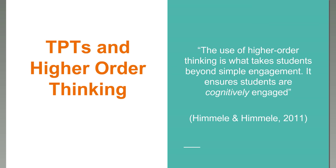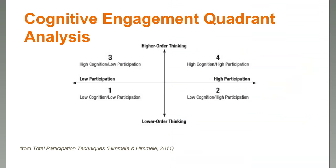Let's make the connection between TPTs and higher-order thinking. This quote from the book: 'The use of higher-order thinking is what takes students beyond simple engagement and ensures that students are cognitively engaged.' As teachers, it's our responsibility to make sure learning is happening at a higher level. This graphic from the book is a quadrant analysis of cognitive engagement — a quadrant with participation and cognition as axes — and it's really important that we continuously shift back to quadrant four, where we want to spend most of our time.